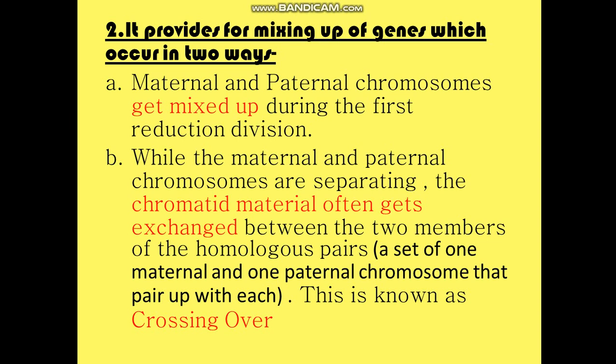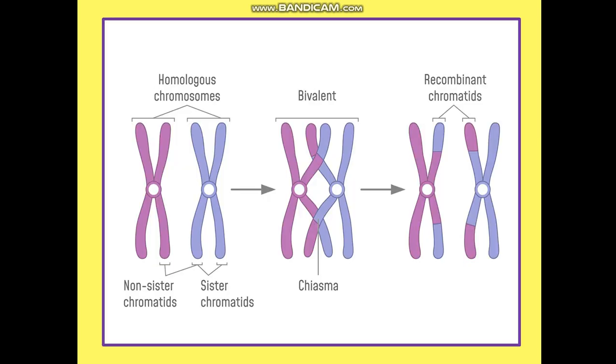The second way is that while the maternal and paternal chromosomes are separating, the chromatid material often gets exchanged between the two members of the homologous pair. A homologous pair is defined as a set of one maternal and one paternal chromosome that pair up with each other. These homologous pairs are similar in size and structure — one from the mother and one from the father.